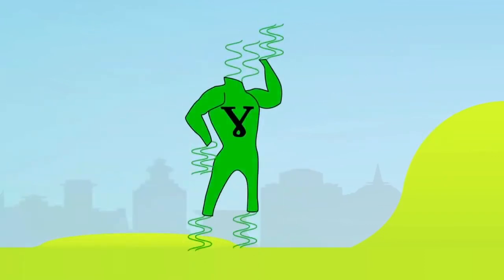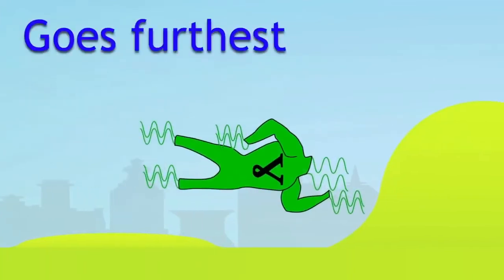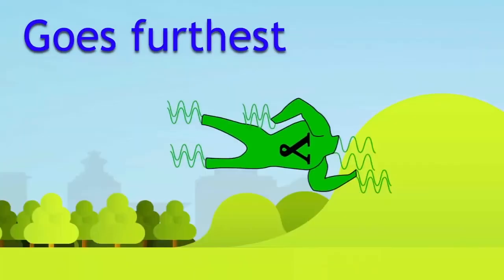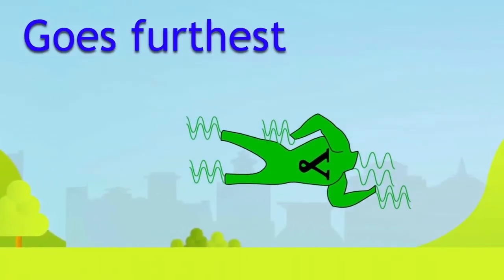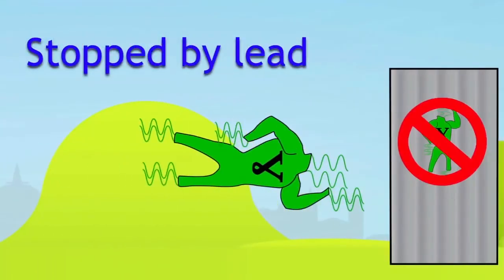The most penetrating of the types of radiation is gamma radiation. Gamma radiation goes furthest in air. It goes a long way in air. And also it goes through aluminum. But it will get stopped by lead.